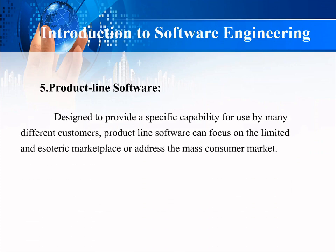Fifth is product line software. Product line software is designed to provide specific capability for use by many different customers. It can focus on a limited niche marketplace or address mass consumer markets. Examples include computer graphics, DBMS (database management systems), and multimedia.